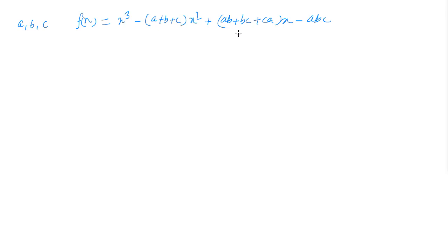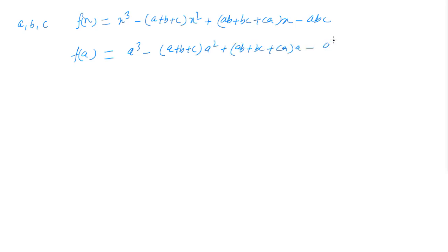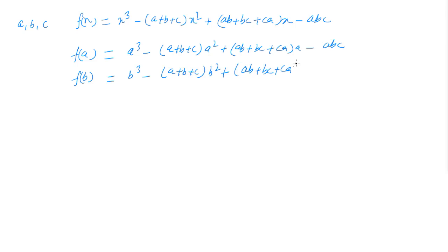Since a, b, and c are roots of this equation, they must satisfy it — in other words, these are the zeros of this polynomial. So f(a) must be zero: a³ - (a+b+c)a² + (ab+bc+ca)a - abc = 0. Similarly, f(b) = b³ - (a+b+c)b² + (ab+bc+ca)b - abc = 0.